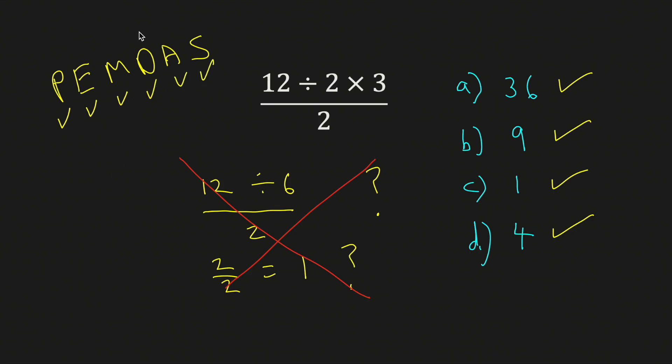But in this acronym, multiplication and division have equal precedence. That is, we simply do multiplication and division left to right in order. Multiplication does not have greater precedence than division.